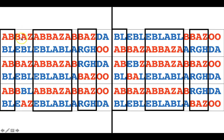There's no haplotype block in this region because an individual can have BAZ, EBL, BBL, or EAZ — there are a bunch of different types here. Things have gotten shuffled around, so there aren't just the two original ancestral parental types anymore; there are these weird shuffled combinations. So there's no haplotype block there.